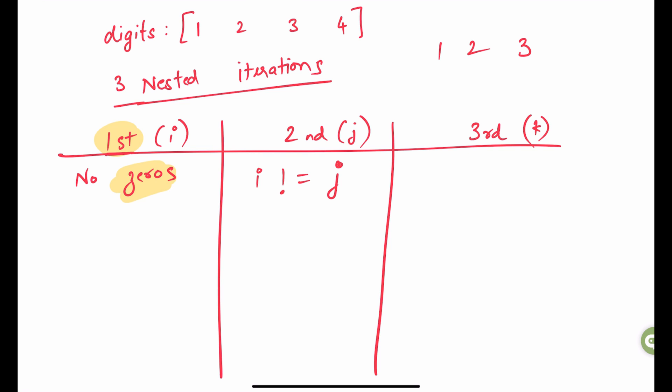So for the nested iteration, let's say if the digit at position 0 is being used by i, we cannot use that for second iteration. Similarly, for the third iteration, k cannot be equal to i or j.